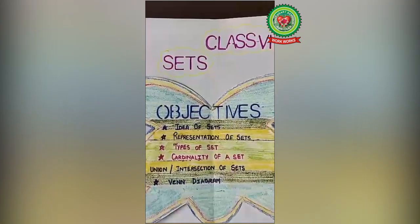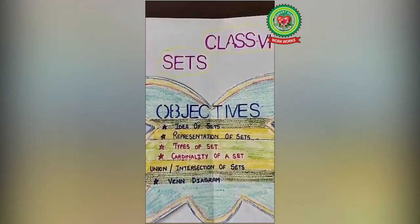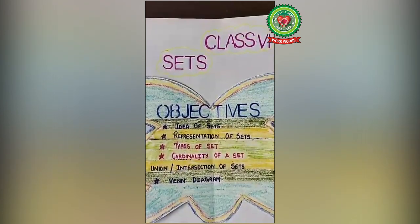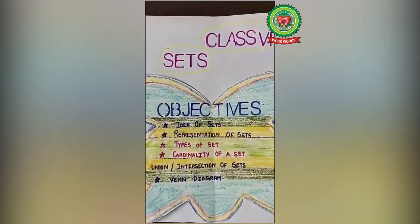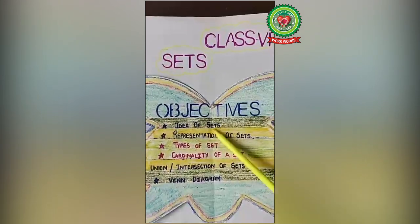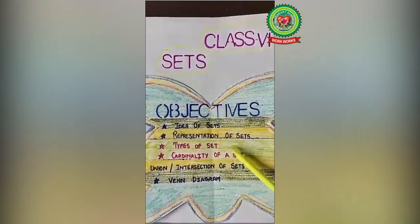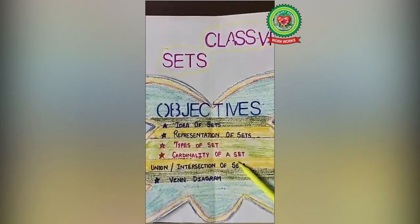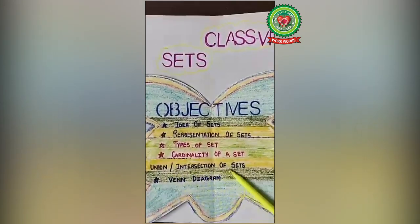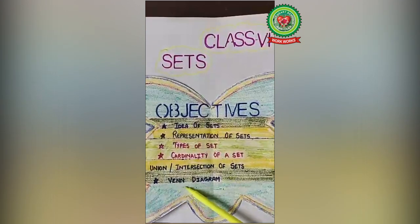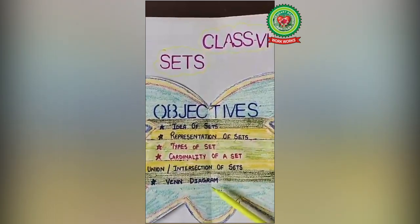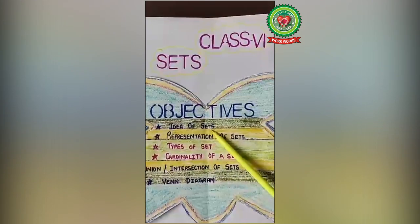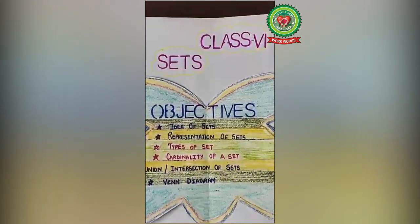Hello students, today we are going to start with a new topic: sets. The objectives of the chapter are idea of sets, representation of sets, types of set, cardinality of a set, union and intersection of sets, and Venn diagram. Today we will focus on the idea of sets — that is, what is a set.